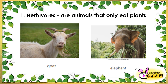Let's start with herbivores. Herbivores are animals that only eat plants. Examples are goat and elephant. Goats and elephants only eat plants — parts of the plants like the fruit and the leaves. That's why they are called herbivores.